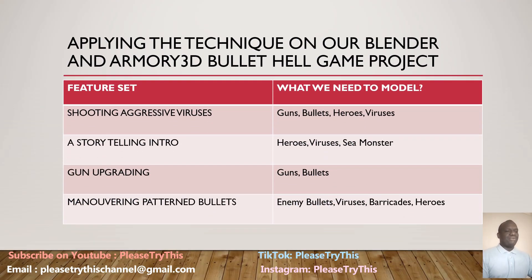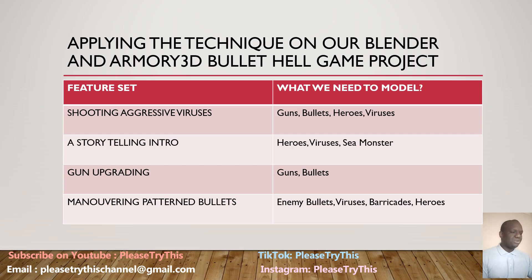Here is an example of me applying the technique on our Blender and Armory 3D bullet hell game project. I looked at my feature set and said the main key feature is: I need to shoot aggressive viruses. What do I need for this feature to come alive? I need the guns for shooting, I need the bullets those guns will shoot, I need the heroes who will shoot, and I need the viruses who will be shot. That feature is now complete.